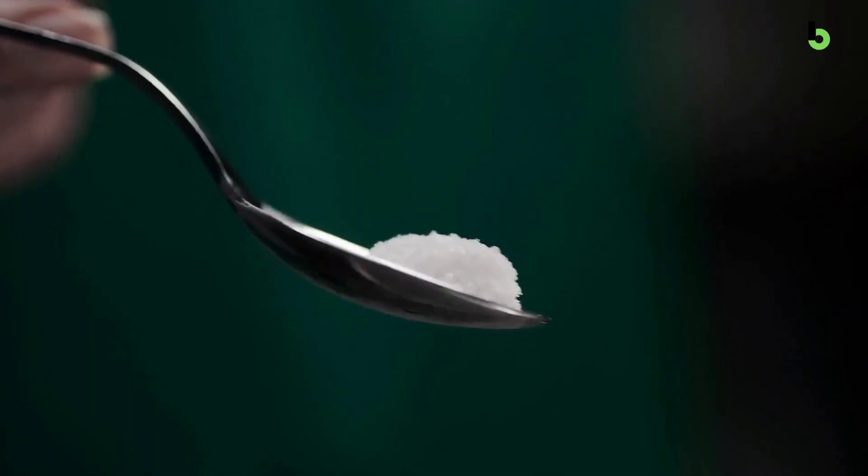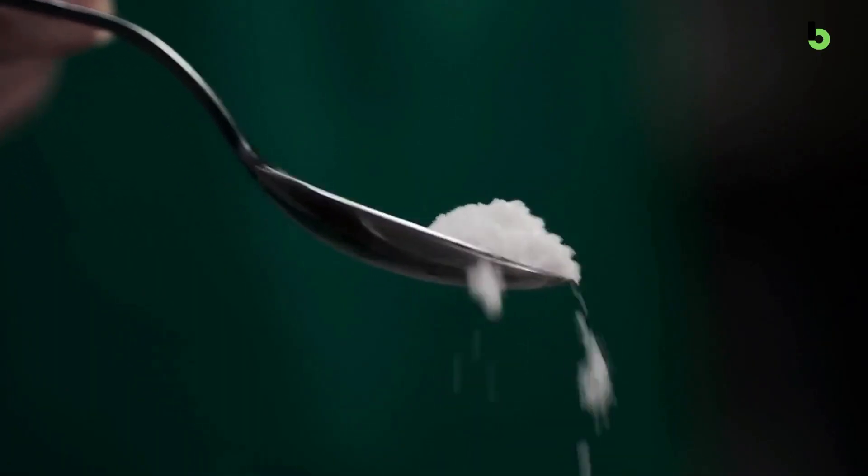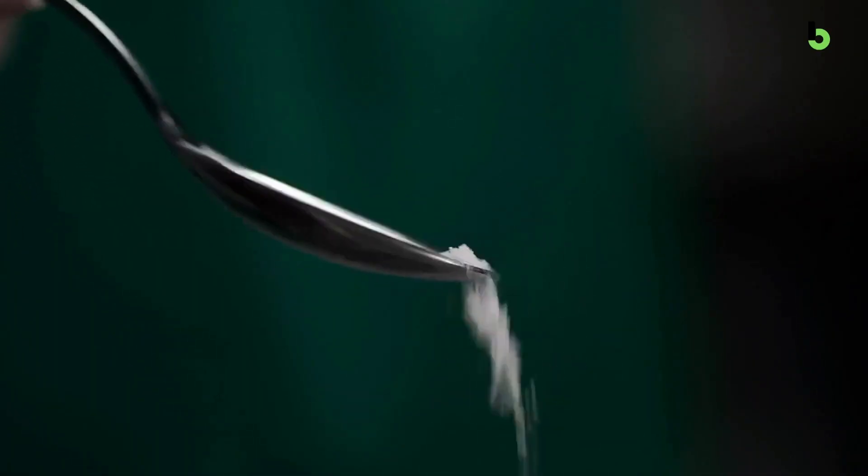They help regulate the body's fluid balance by controlling the amount of water that's excreted. Kidneys help regulate the levels of electrolytes such as sodium, potassium, and calcium in the body.